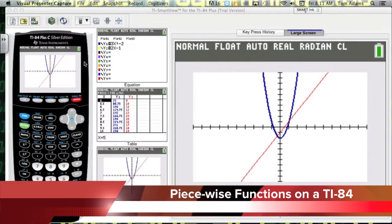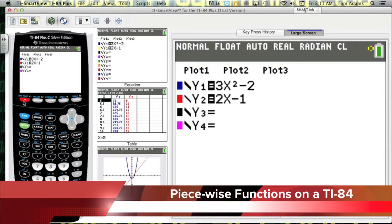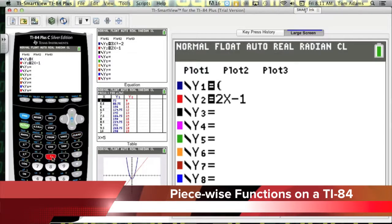So how do we do that? One way I could do that is come in here and clear this out. What you want to do is put your function in parentheses. So we're going to say 3X squared minus 2 and then close your parentheses. Now right after that, we set the parameters of what our X values are going to be.